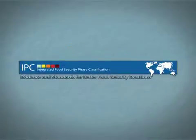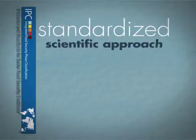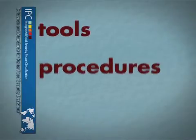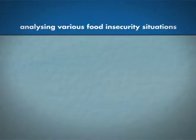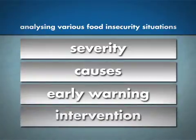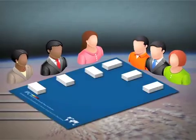The IPC, Integrated Food Security Phase Classification, promotes a standardized as well as scientific approach to food security, which includes tools, procedures and processes for analyzing various food insecurity situations — severity, causes, early warning and objectives for intervention — communicating to decision-makers in a timely and clear manner.